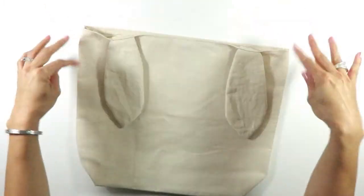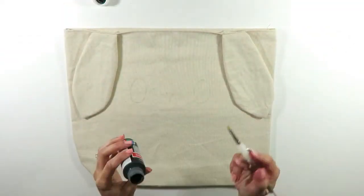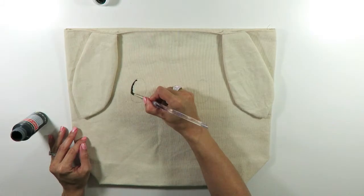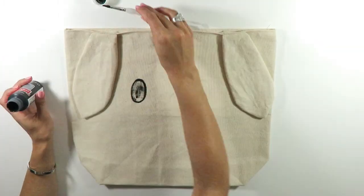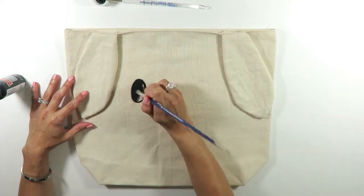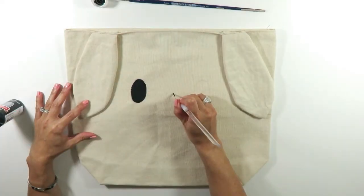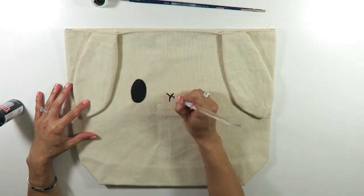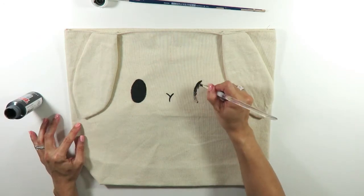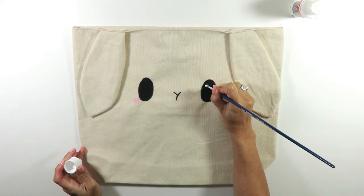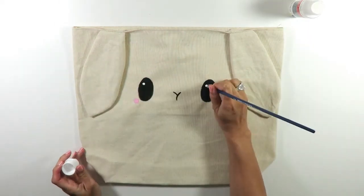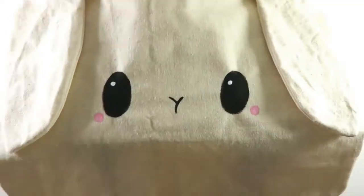With the ears now attached to the bag, the only thing missing is the face of the bunny. So I first drew it with pencil and then I painted it with acrylics. To make it extra cute I added rosy cheeks and the detail for the eyes. And that's it, it looks so cute.